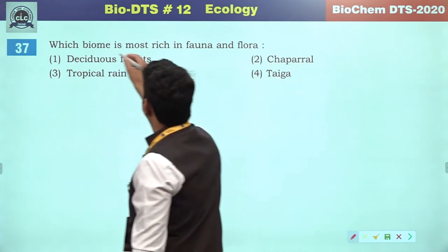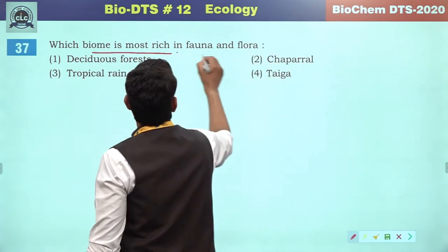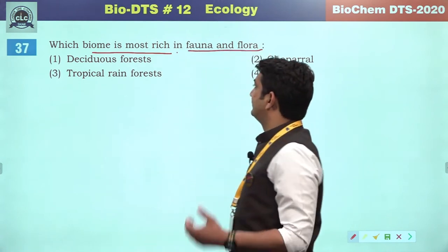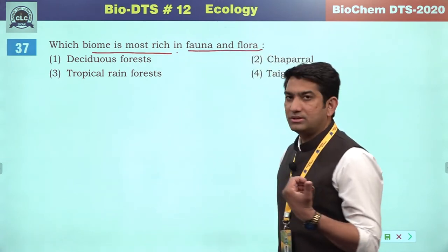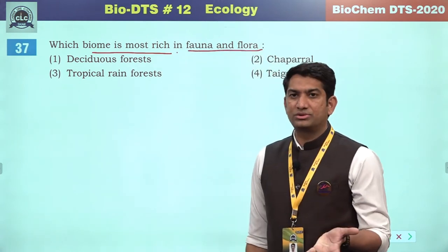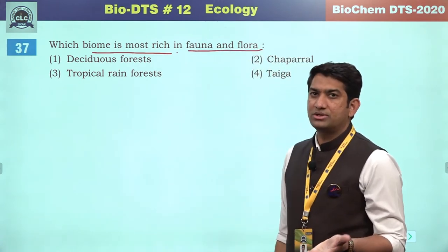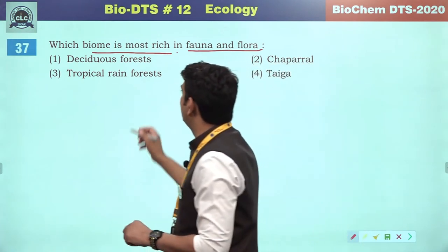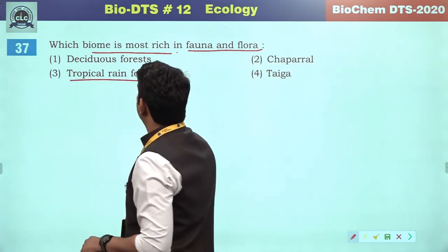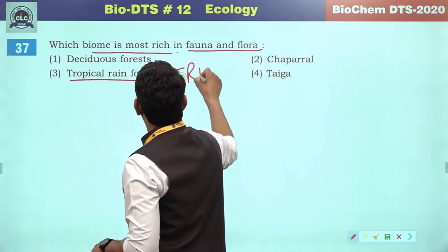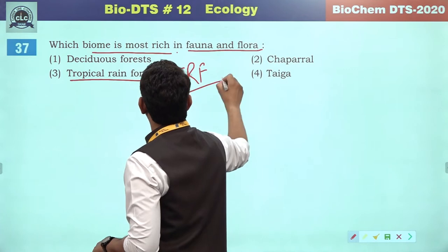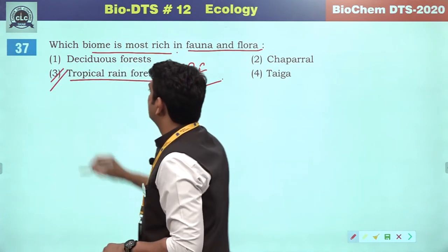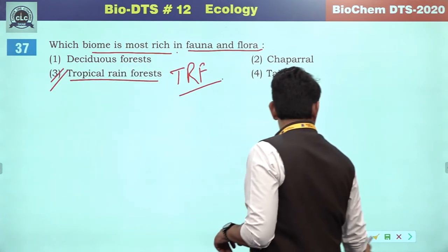Which biome is most rich in fauna and flora? Where diversity is highest — that will be the richest. The tropical rainforest (TRF) will be the richest or most diverse.